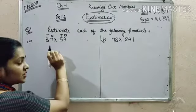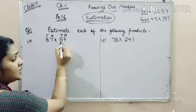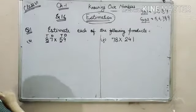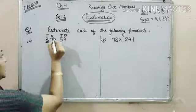Here 54 is the smaller number and the highest place is 10. That means we have to round off both the numbers to nearest 10s.